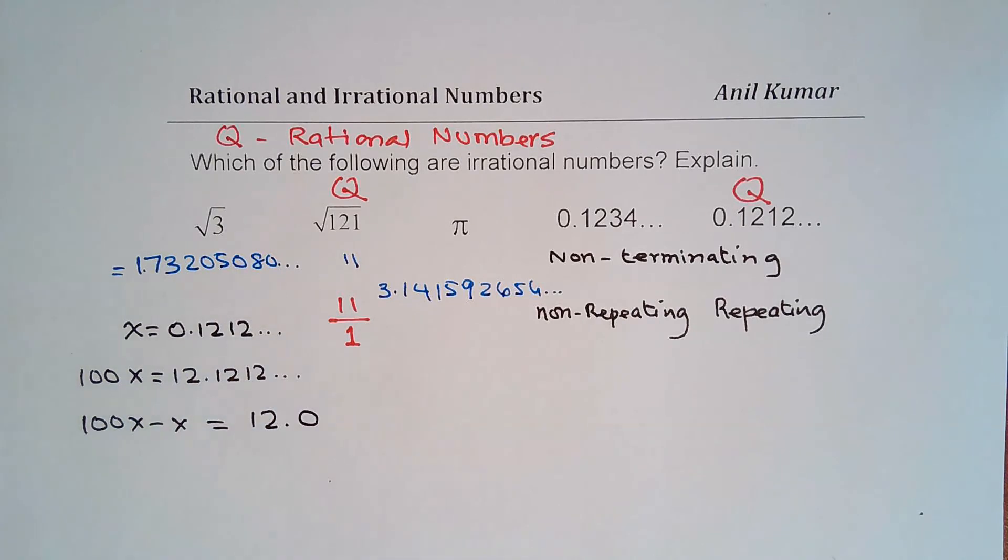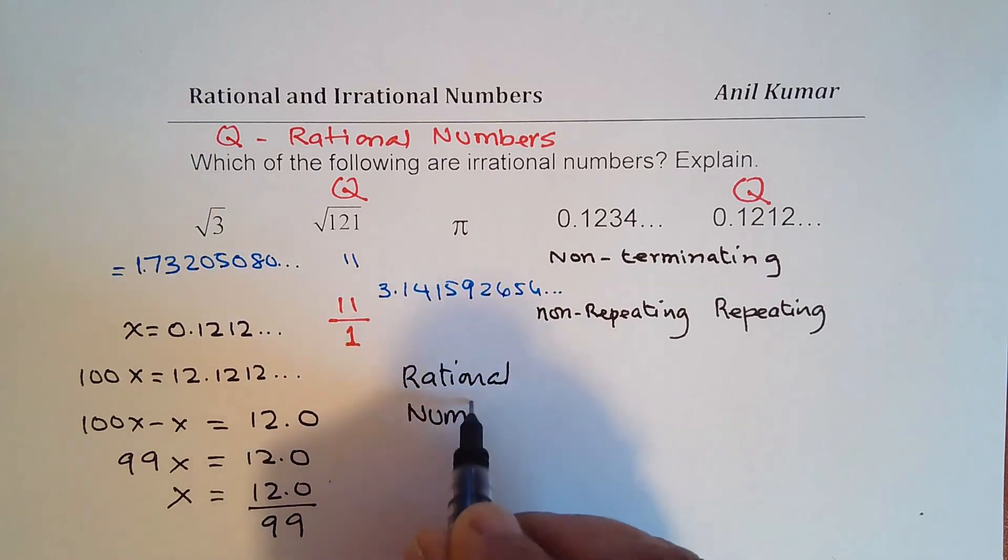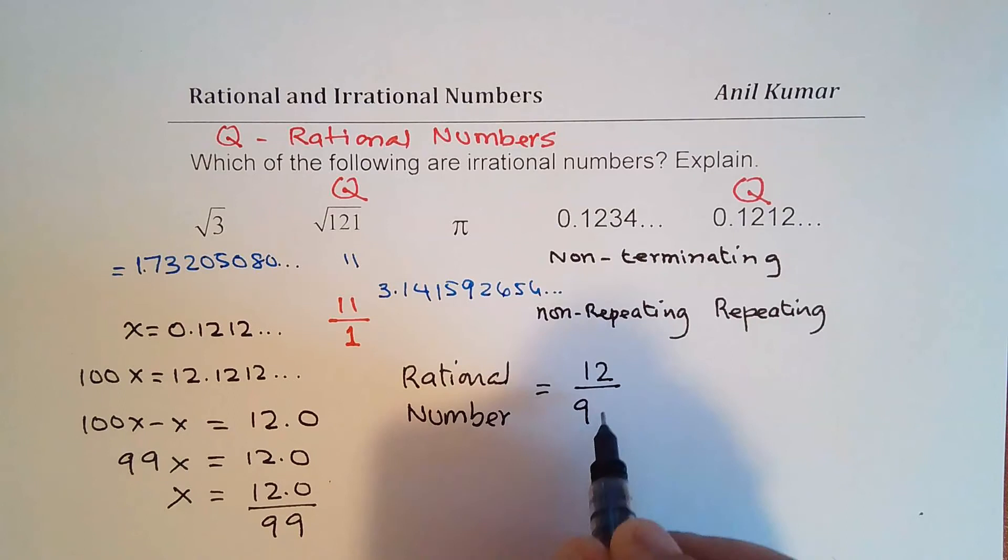Perfect. And on the left side, what we have is 99x. So 99x is 12.0. So we can write x as equal to 12.0 divided by 99. So that becomes a rational number. So we have a rational number which can be written as 0.1212 and it is 12 divided by 99.